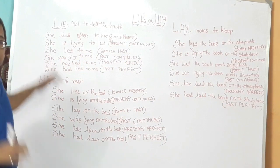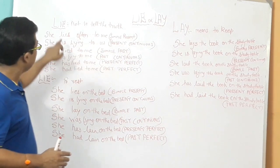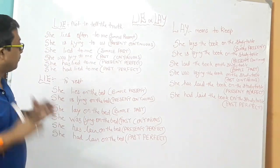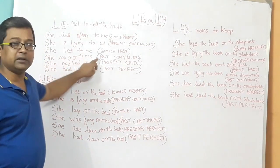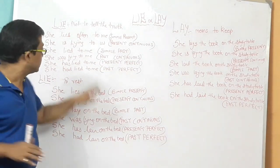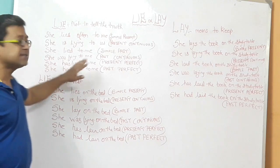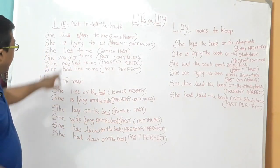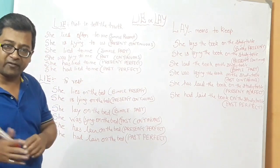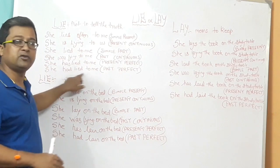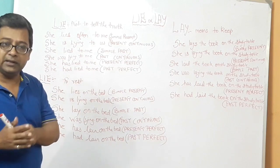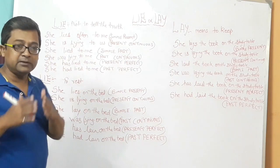In simple past, the verb lie becomes 'lied' — L-I-E-D: 'she lied to me.' In past continuous, it becomes 'she was lying to me.' In present perfect, it becomes 'she has lied to me' — using 'has' and the third form of lie. In past perfect, it becomes 'she had lied to me,' using 'had' and then the third form of lie. So here the word lie means not to tell the truth.